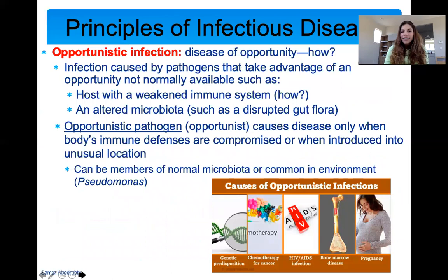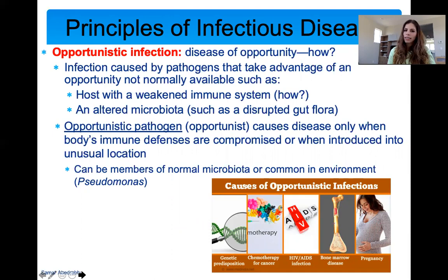Opportunistic infections are diseases of opportunity — infections caused by pathogens that take advantage of your weakened immune system. This can be due to many things: maybe your microbiota is altered because you've been taking a lot of antibiotics, so you get a yeast infection; or you're taking chemotherapy and your immune system is already dealing with a lot, so you can easily get a Pseudomonas or Staphylococcus infection — organisms that wouldn't otherwise be very harmful.